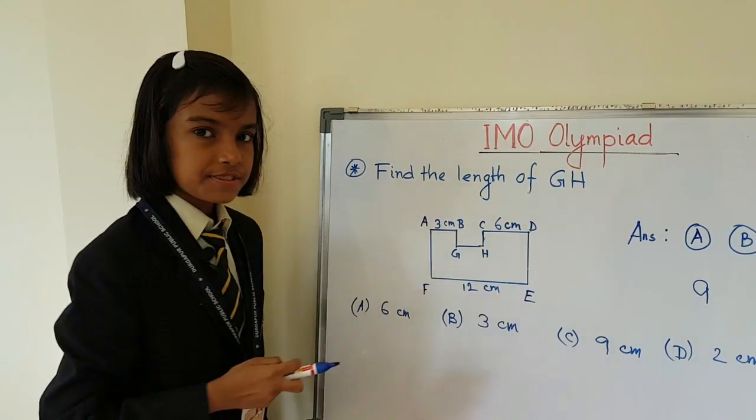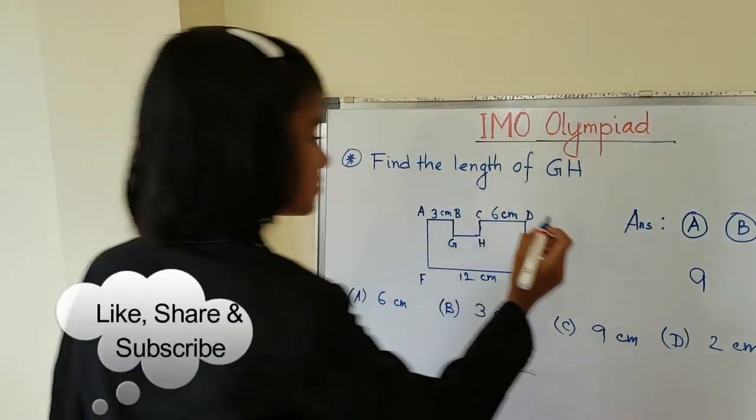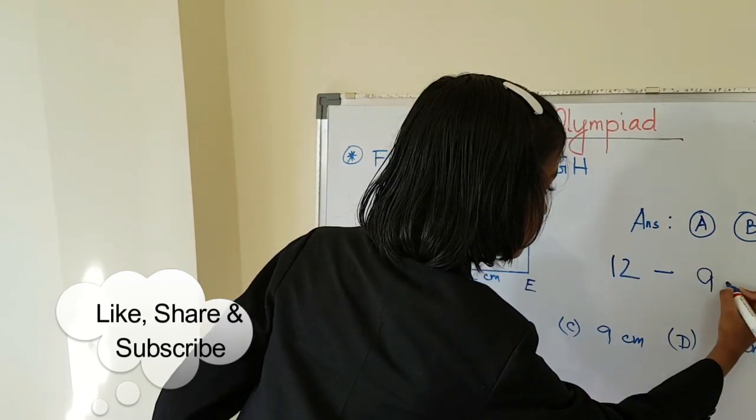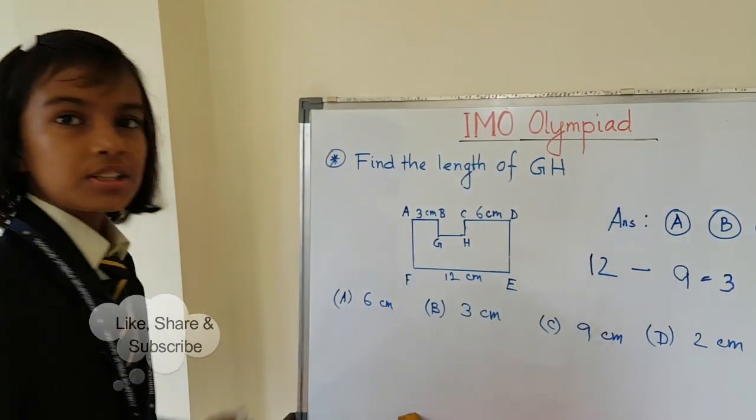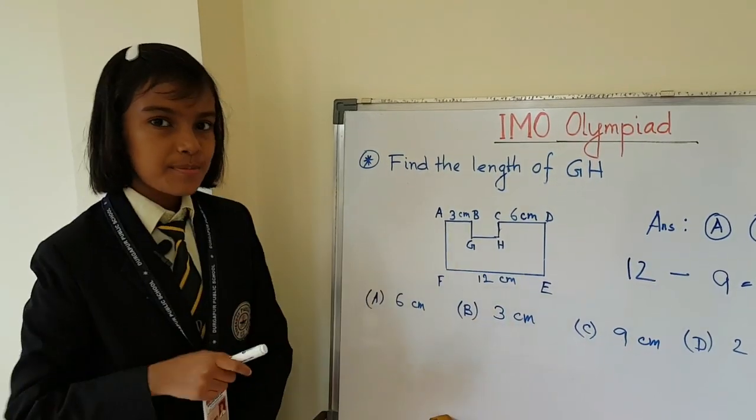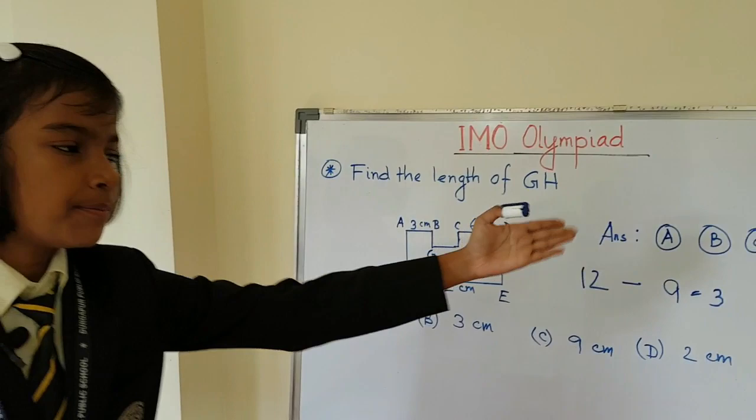So 12 minus 9 is equal to 3 cm. So what is the answer? 3 cm. The answer is B, so you have to darken B. Answer is 3 cm.